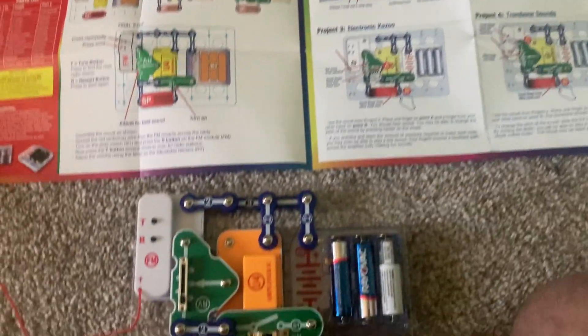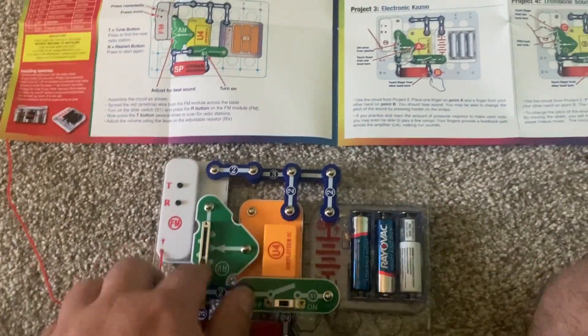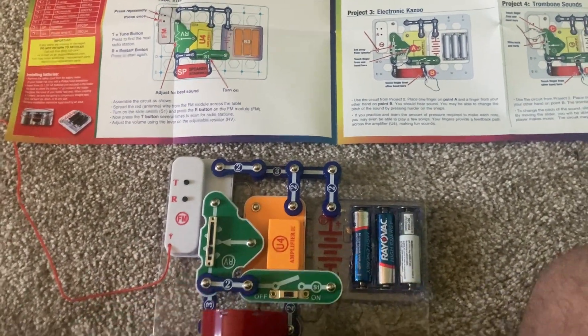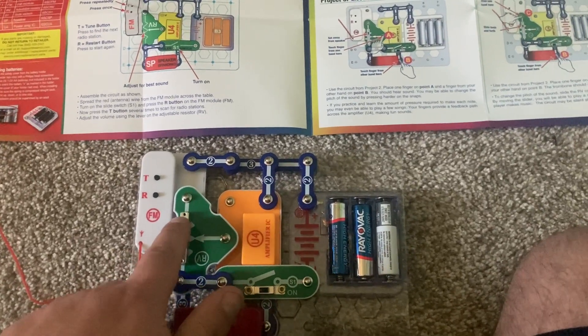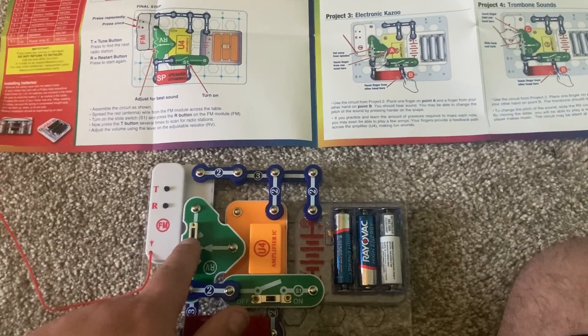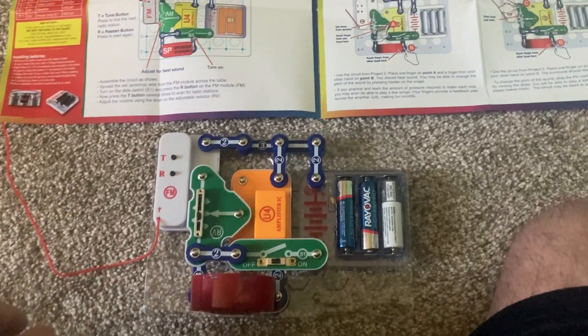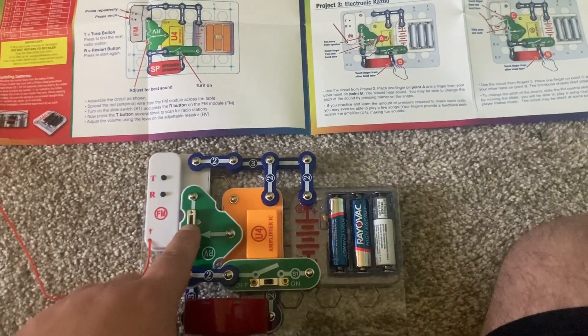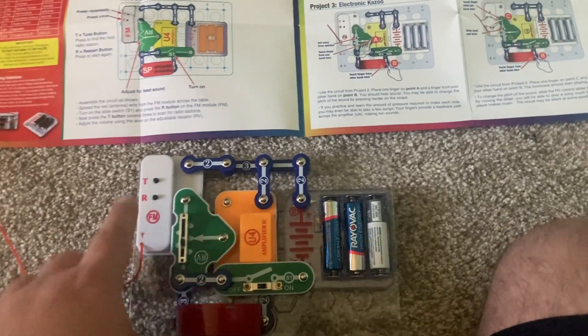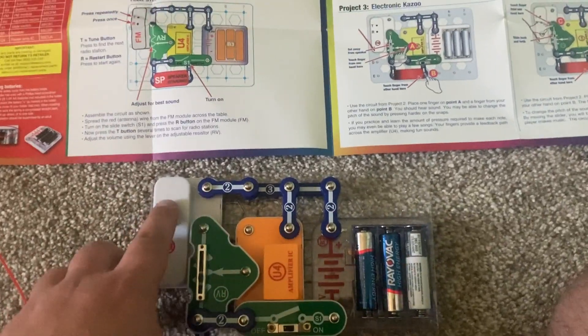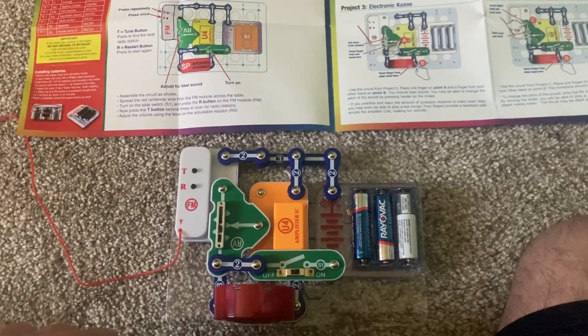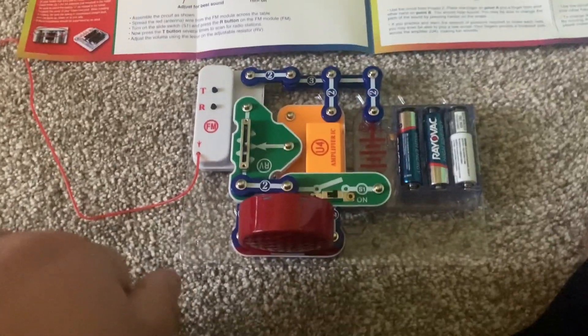To use it, you turn on the slide switch and move the lever on the adjustable resistance with desired volume. Now to switch stations, you push the T button, the tune button. Here's some neat classical music.